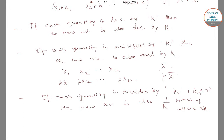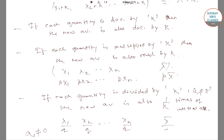That is, if x1, x2, till xn has the average x-bar, then x1/q, x2/q, so on till xn/q — where q is not equal to 0 — has the average x-bar/q.